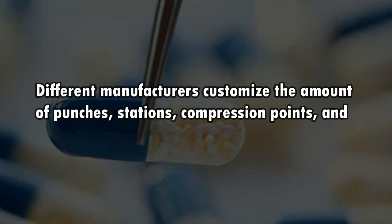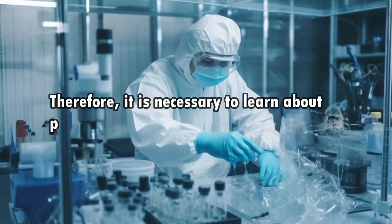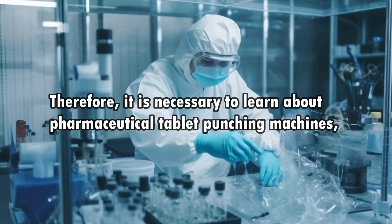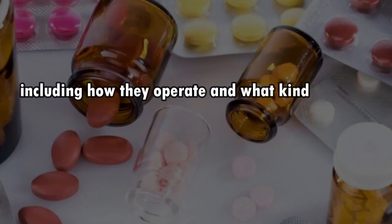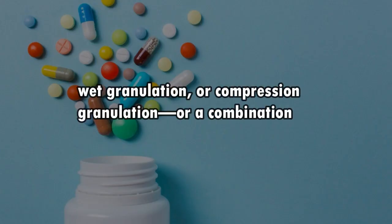Different manufacturers customize the amount of punches, stations, compression points, and speed of their tablet presses. Therefore, it is necessary to learn about pharmaceutical tablet punching machines, including how they operate and what kinds of tablets can be made using them — using any one of the three recognized methods: direct compression, wet granulation, or compression granulation, or a combination of them.